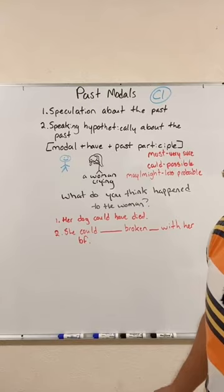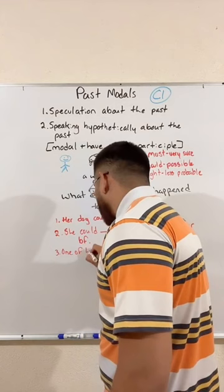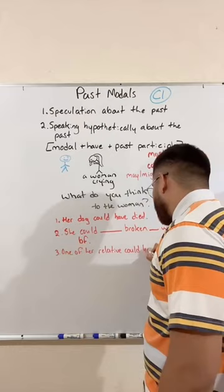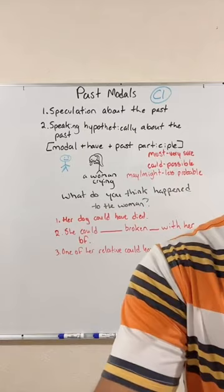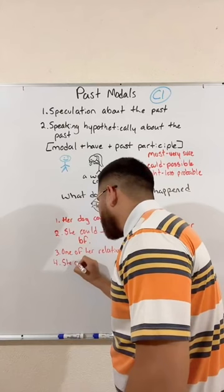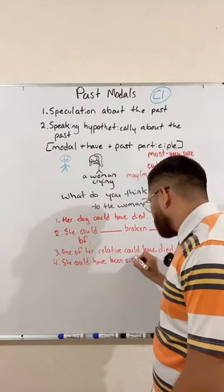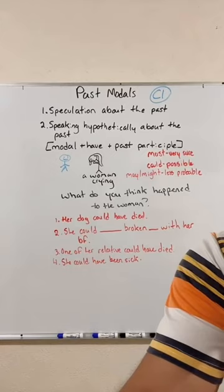Maybe one of her relatives could have died — yes, one of her relatives could have died. She could have been sick, Destiny — excellent, something less serious. She could have been sick.